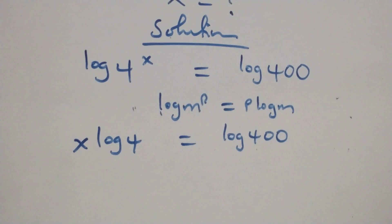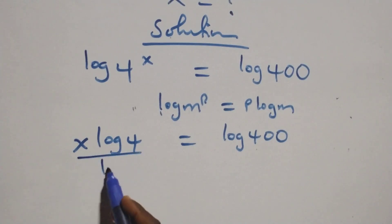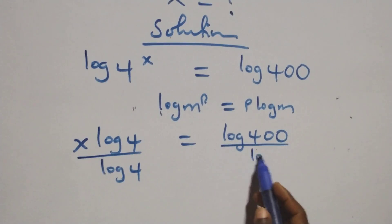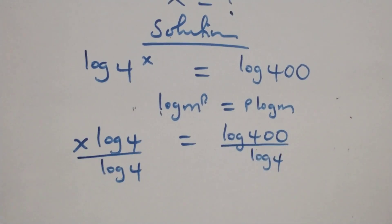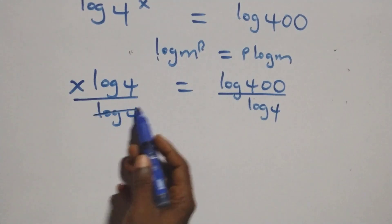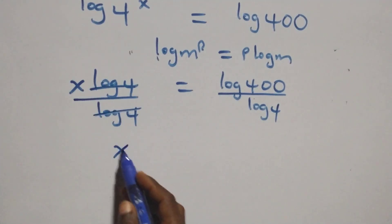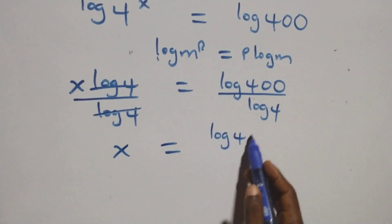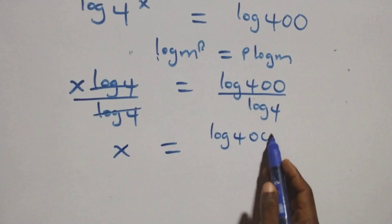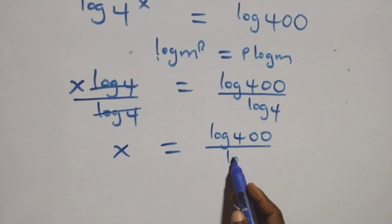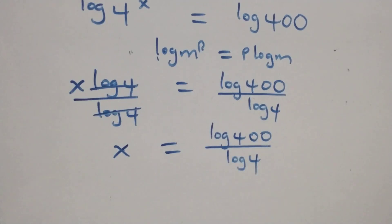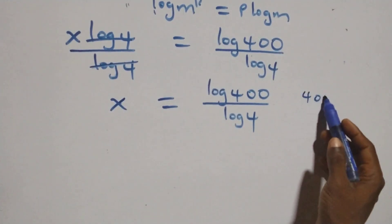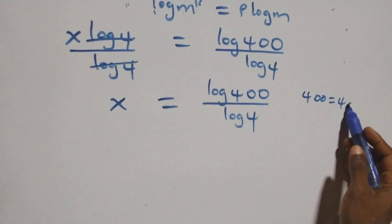Next step: divide both sides by log 4. We divide this side by log 4 and also divide this side by log 4. The log 4 cancels with each other, and we have x equals log 400 over log 4. Then the next step: write 400 as 4 times 100.